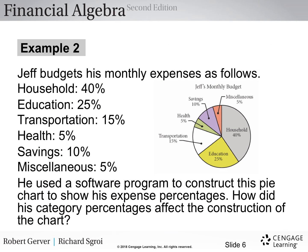Let's look at example two. Jeff budgets his monthly expenses as follows. Household, 40 percent. Education, 25 percent. Transportation, 15. Health, 5. Savings, 10. And miscellaneous, 5. He used a software program to construct this pie chart. Notice, it's a pie chart. Looks a lot like a pie. To show his expense percentages. How did his category percentages affect the construction of the chart?